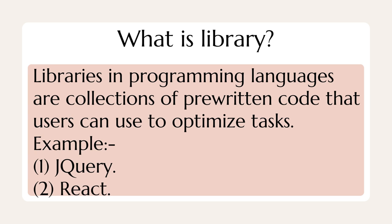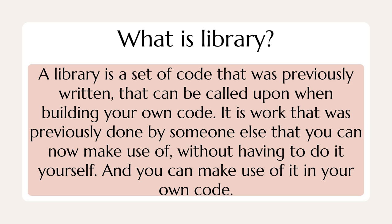What is a library? A library is a collection of pre-written code that users can use to optimize tasks. For example, jQuery and React — both are libraries of JavaScript. Or in other words, we can say that a library is a set of code that was previously written that can be called upon.